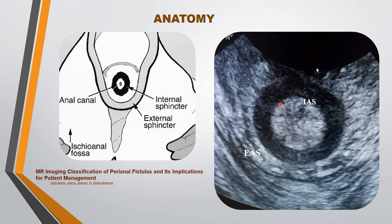Similarly, the transperineal probe was kept on the perineum just above the anal opening. Here we can see the ring-like hypoechoic structure is the internal anal sphincter. The anal lumen is covered with anal mucosa. The area of mixed echogenicity is the external anal sphincter. In axial section, the potential space between the internal and external sphincter — the intersphincteric space — is filled with normal fatty tissue.